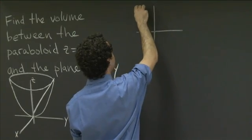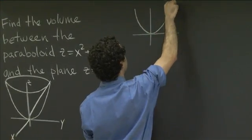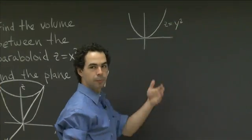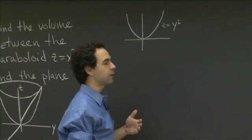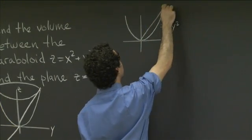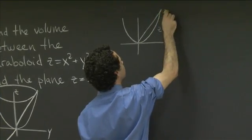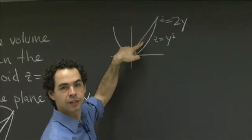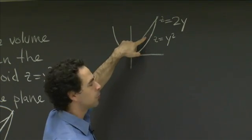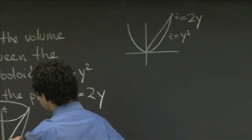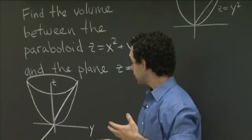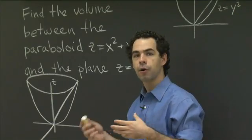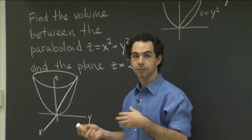So in the yz-plane cross-section, this paraboloid just becomes a parabola — the parabola z equals y squared, which is a plane section of the paraboloid z equals x squared plus y squared. And this plane z equals 2y becomes the line z equals 2y. This little sliver is a plane section of the region in question. So we see that z is going from the paraboloid to the plane. But what we really need to understand then is what the relationship between x and y is — what is the shadow of this region?